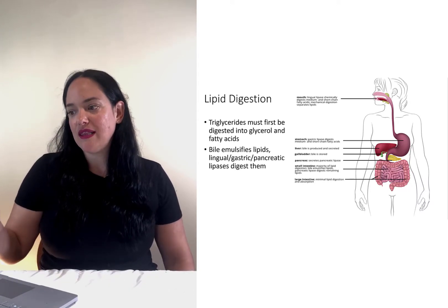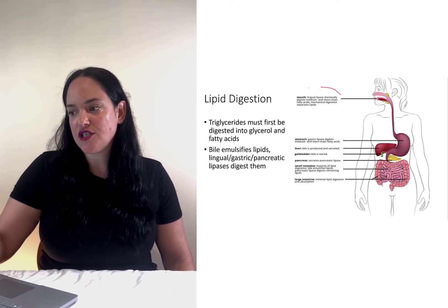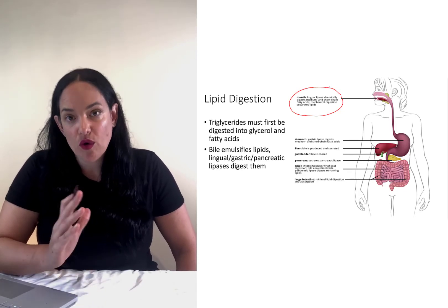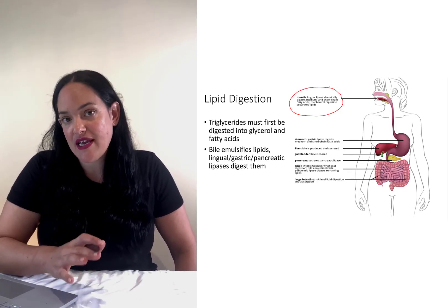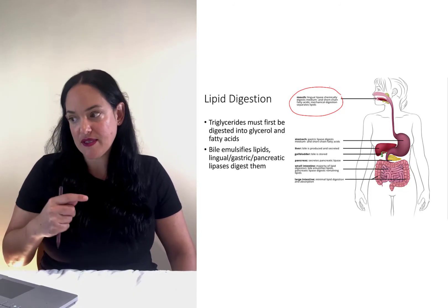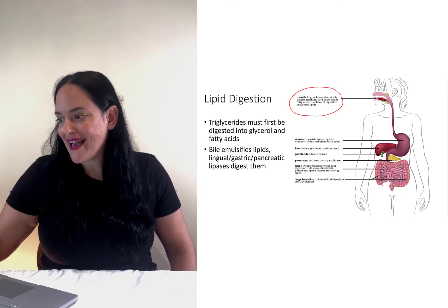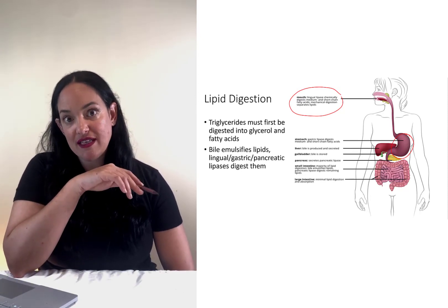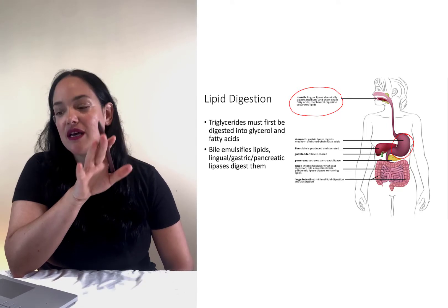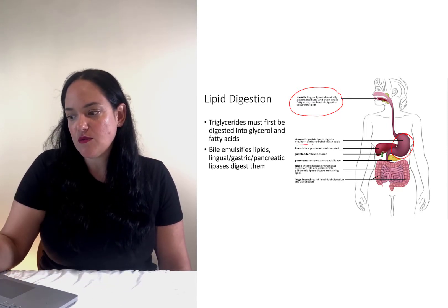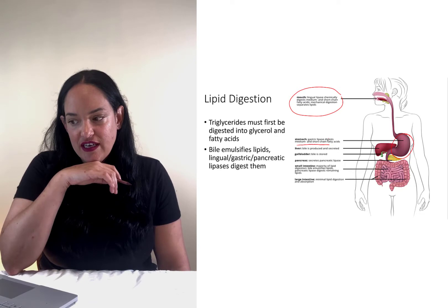Lipid digestion does begin in the mouth with the action of lingual lipase, which as the name suggests is an enzyme that helps to start breaking down lipids. In the stomach, there is a little bit of lipid digestion that occurs with the secretion of gastric lipase, which helps digest mostly medium and short chain fatty acids.